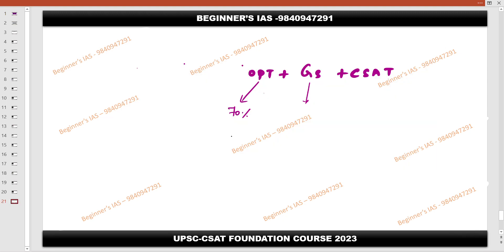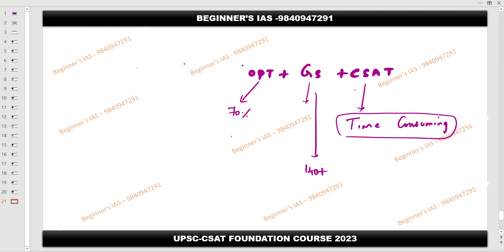Okay, let us start the session. Option plus GS plus CSAT - so this is the thing. Nowadays, if you go through the previous question papers regarding CSAT, there is a difficulty level. It is not difficulty, it's a time-consuming one. Therefore, you need to give much importance to CSAT. Even if you are scoring 140 plus or 120 plus but fail to cross the 66 mark, obviously you are losing one year. Therefore, please try to focus and give much importance to this CSAT paper.